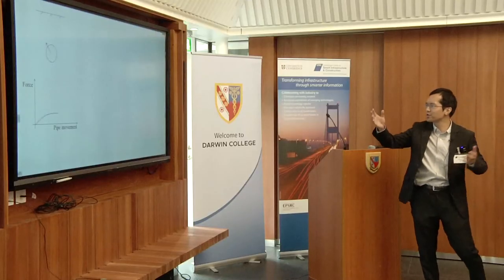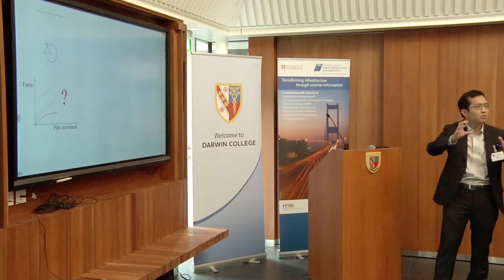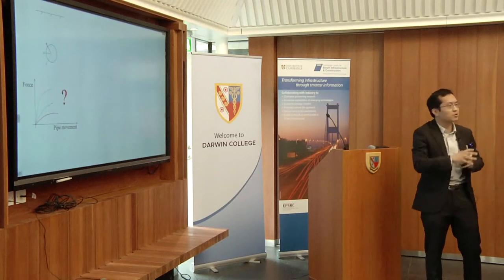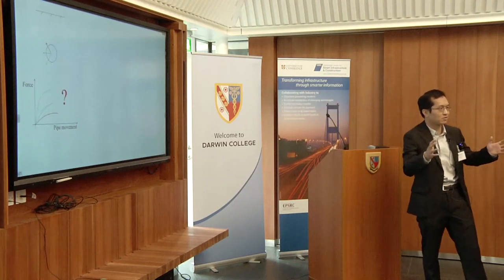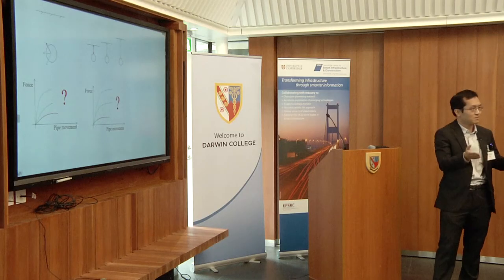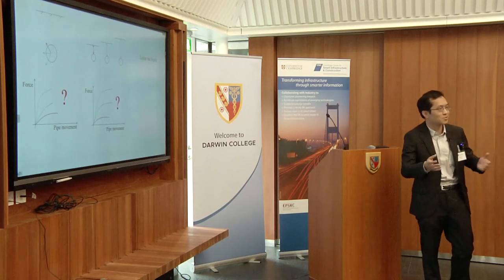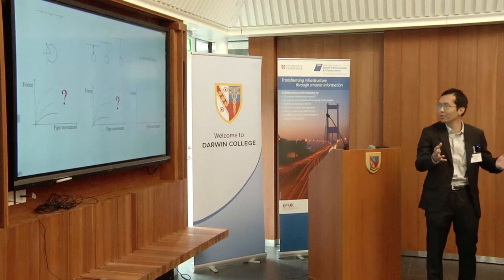Engineers are very curious about what kind of force-pipe-movement relationship looks like if we move the pipe in different directions, and what factors can influence these curves. For example, if we have different buried depths, how could these curves change? And if the underground sand is loose or dense, how could these curves change as well?